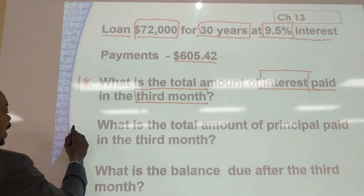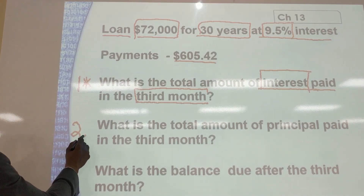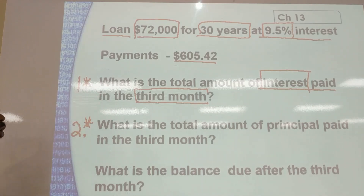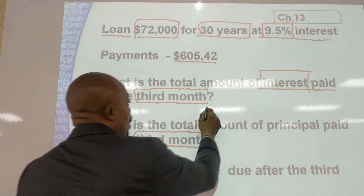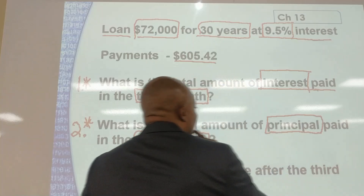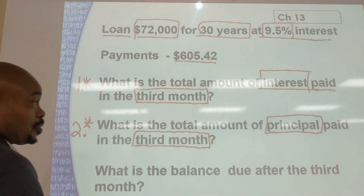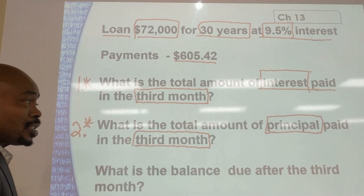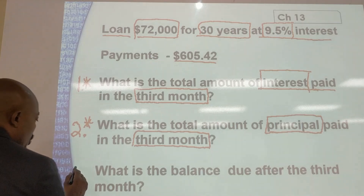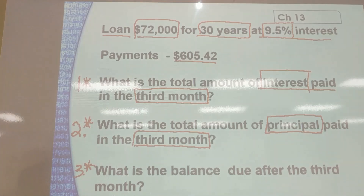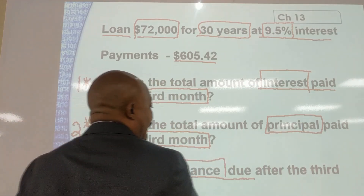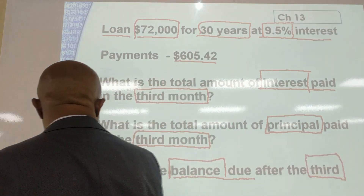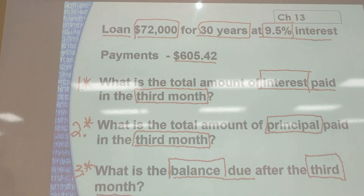The second question is: what is the amount that will be paid toward the principal in the third month? And the third question asks: what will be the balance due after the third month payment is made? So there are three questions to answer in this particular problem.